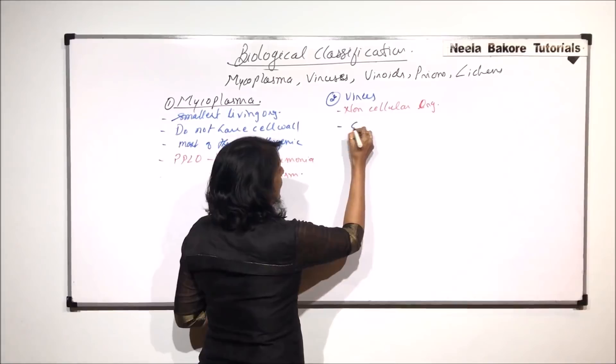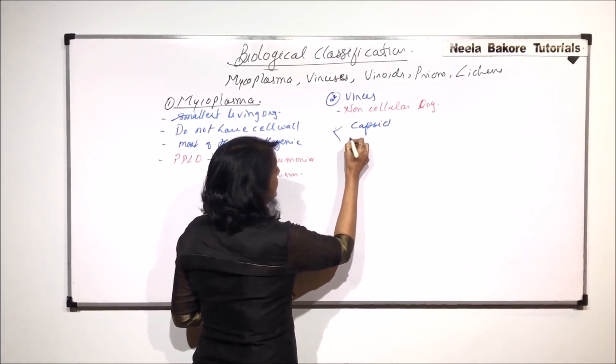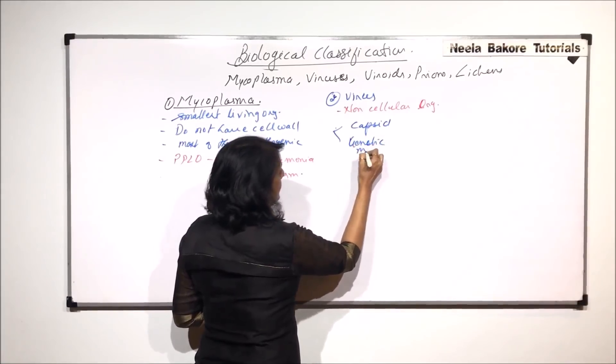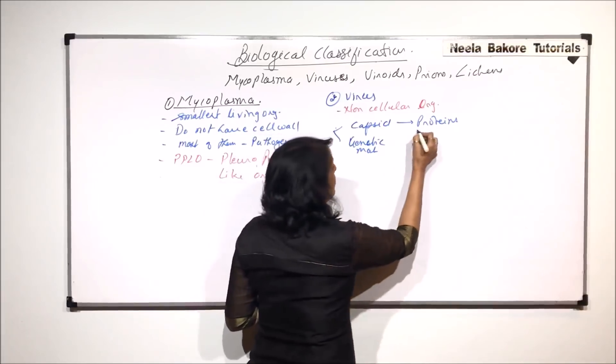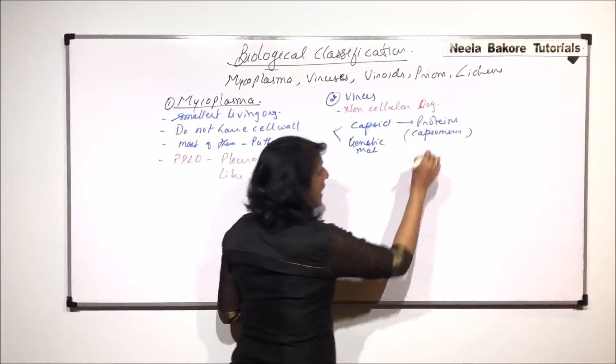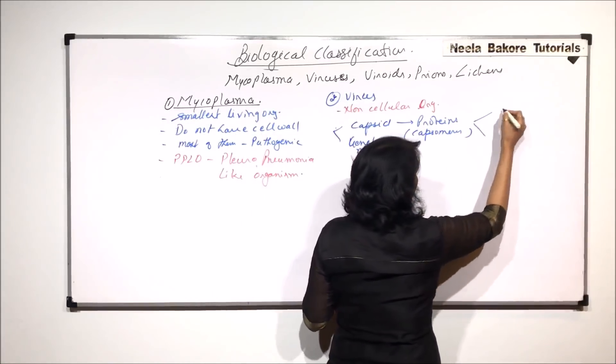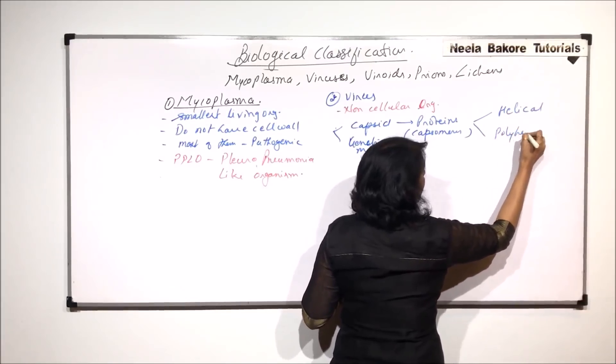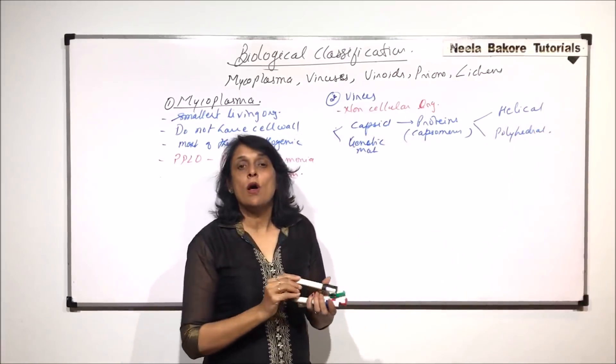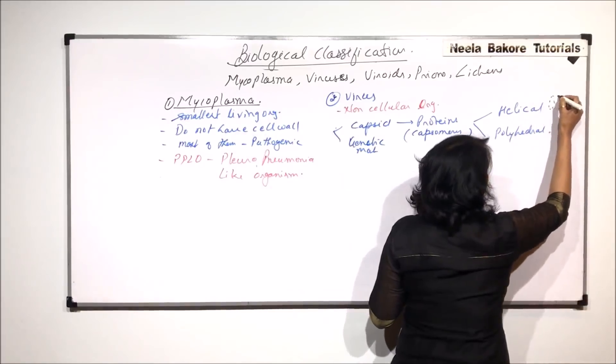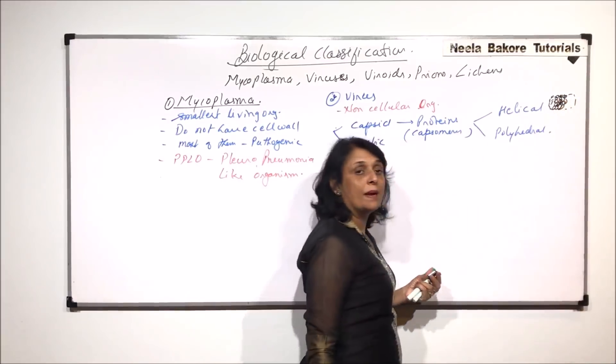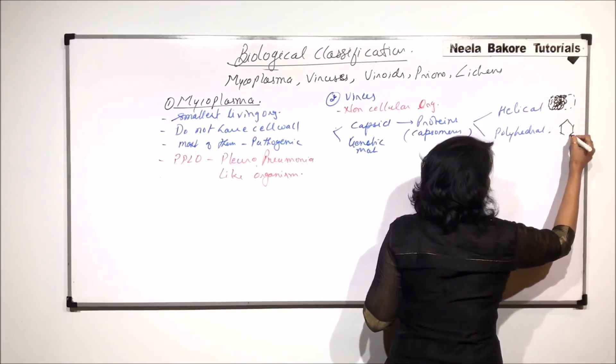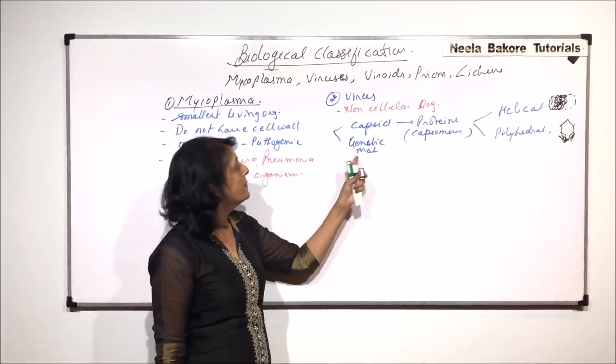What exactly do they have? They have a capsule and the genetic material. The capsule is made up of proteins and these protein pieces are known as capsomeres. The arrangement of these capsomeres can be helical or polyhedron. The inner part would have the genetic material.